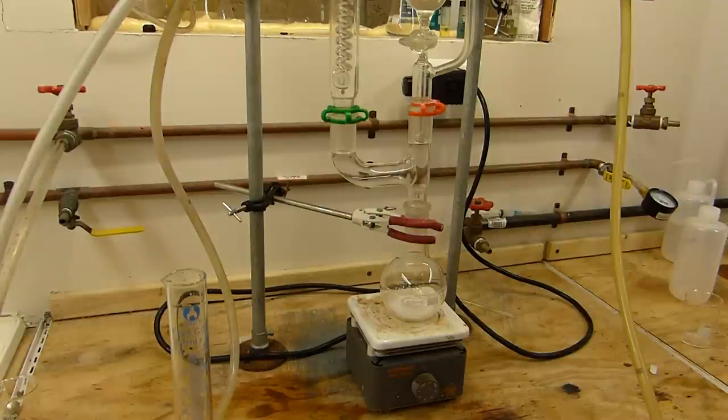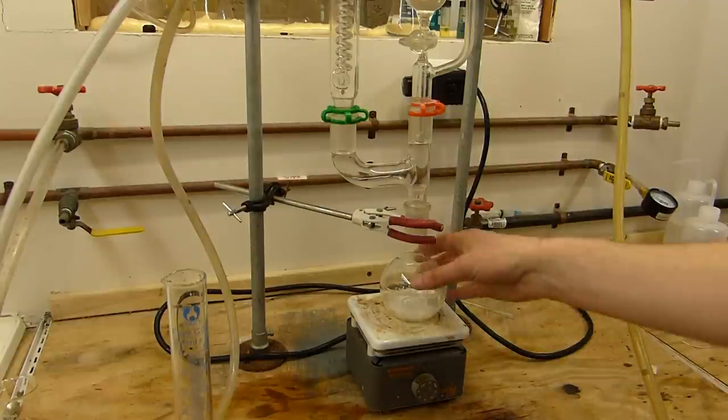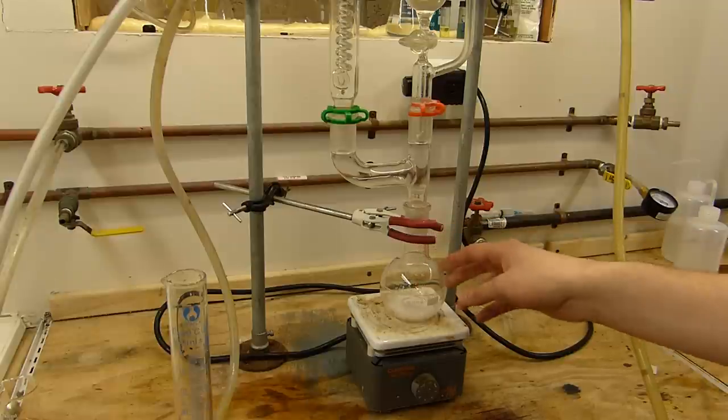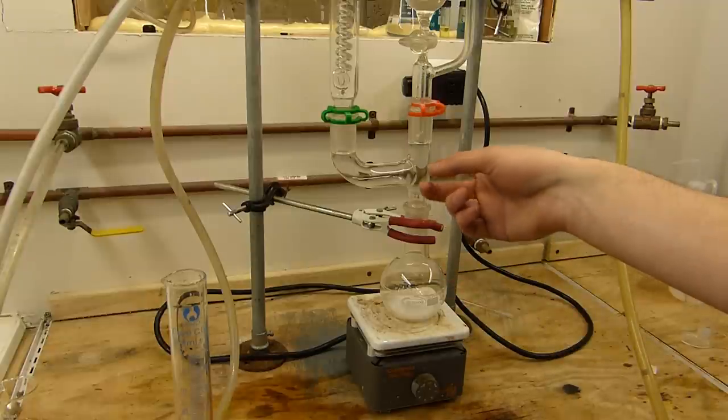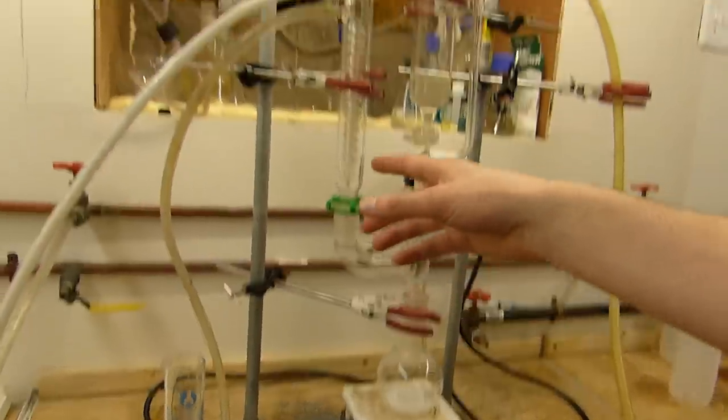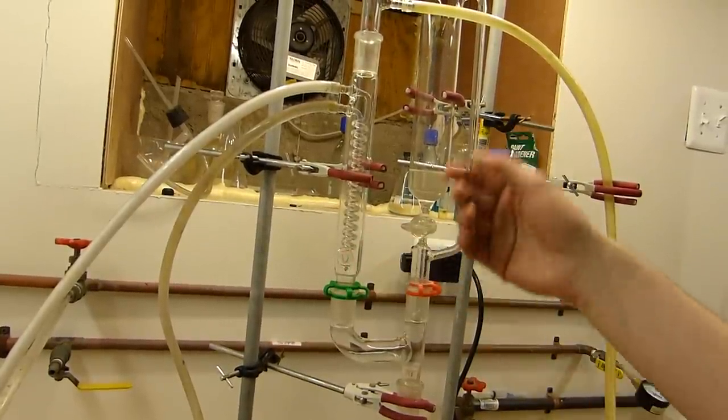You can then set up the ammonia generator. On top of a hot plate, which you'll need to heat the solution during the later stages of the reaction, you put the flask, in this case the 250 milliliter with the 9 grams of sodium hydroxide in it, a Claisen adapter, and then on the Claisen adapter, we have first a reflux condenser here. This happens to be a coil condenser, but any reflux condenser will do.